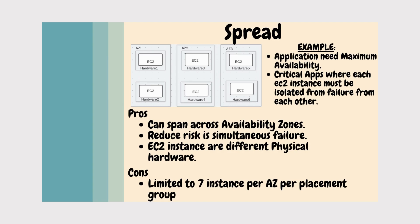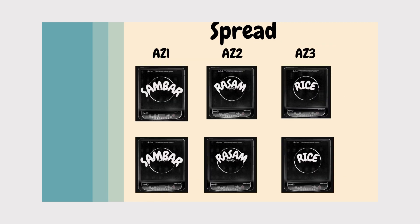The real-time example for Spread: imagine you have sambar and rice cooking on separate induction coils. If one particular induction coil goes down, the other induction coil continues cooking. Similarly, if one induction coil in the same availability zone has an issue or the power goes off, another induction coil can take over — same with the rice. That's the real-time example for the Spread strategy.